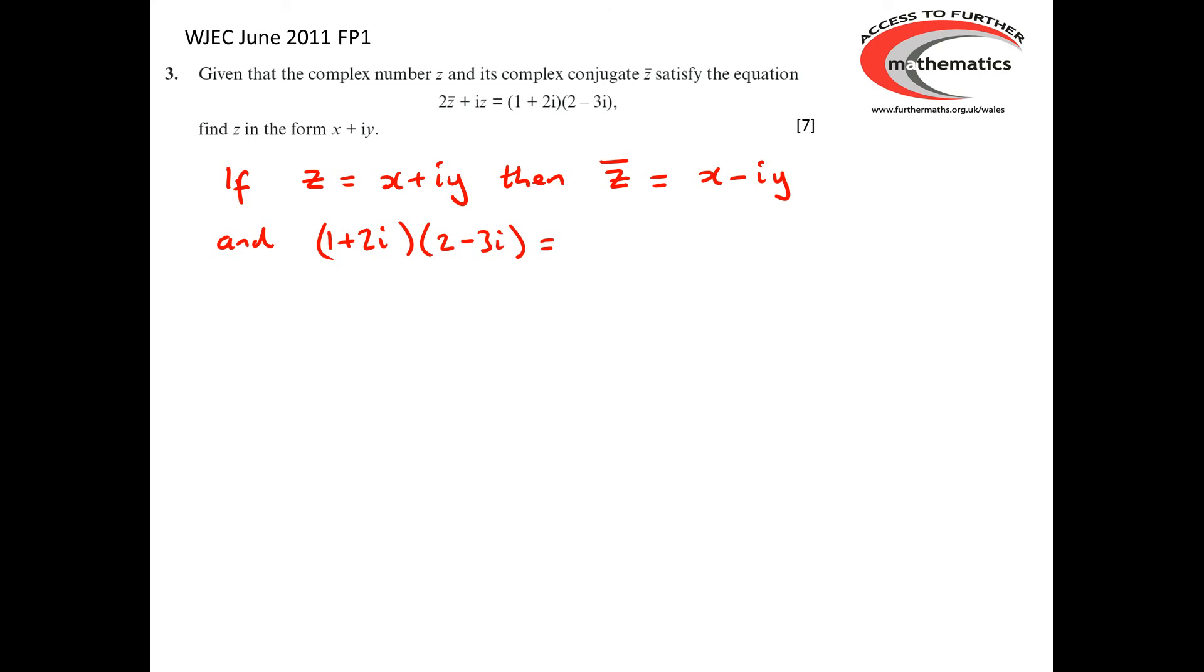So we've got to work out what (1 + 2i)(2 - 3i) is. We multiply these brackets out in the normal way. So we've got 1 times 2 is 2. 1 times -3i is -3i. 2i times 2 is 4i. And 2i times -3i is -6i². And if we go through that and simplify it in the obvious ways, the -3i and the 4i becomes just plus 1i. And the -6i² is -6 times -1 is plus 6. So the whole thing simplifies through to 8 + i.